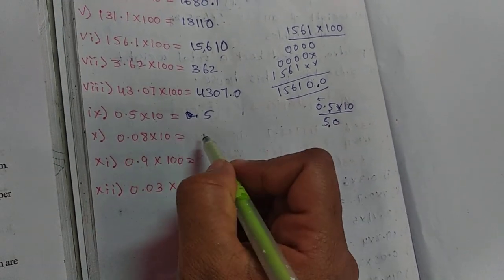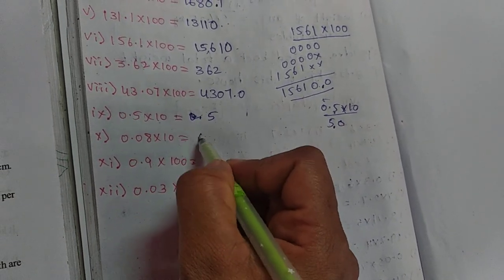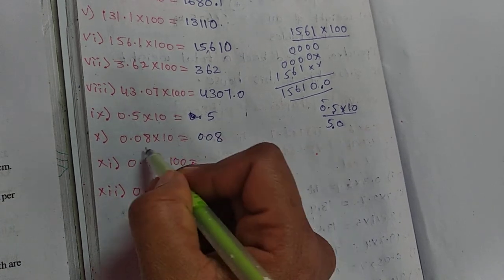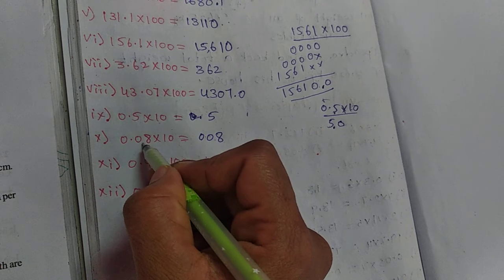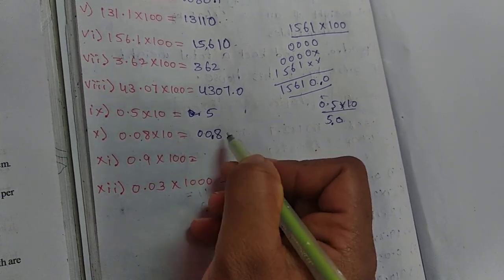Next, here also 0.08 into 10. One decimal point moves to the right. So here the point comes, and the answer is 0.8.